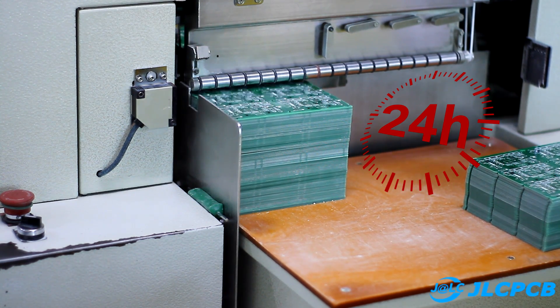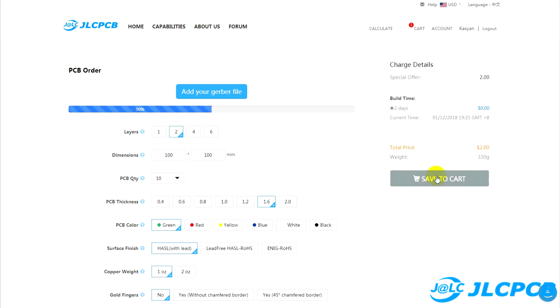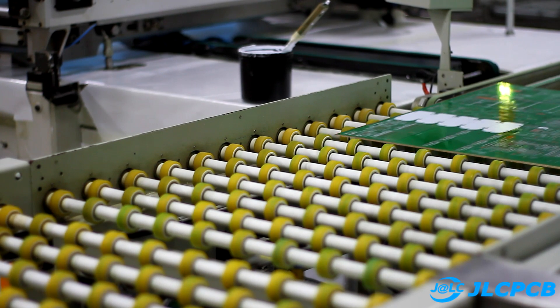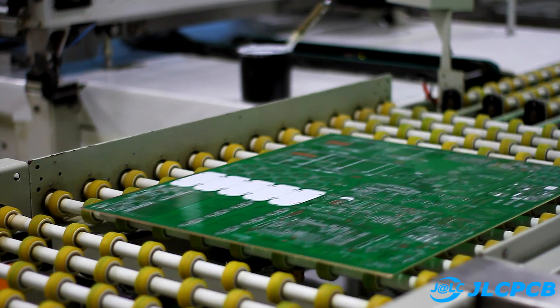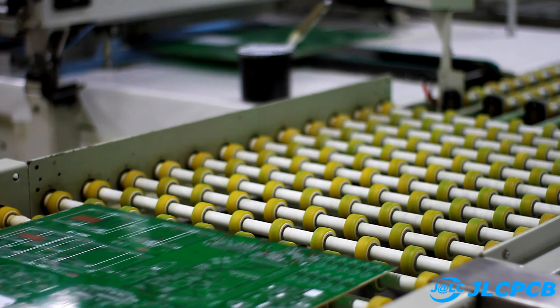Just upload the Gerber file of your board to the JLCPCB website, select the options you need, and that's all. A link to the company's website and to a detailed video describing the production process of the boards can be found in the description.